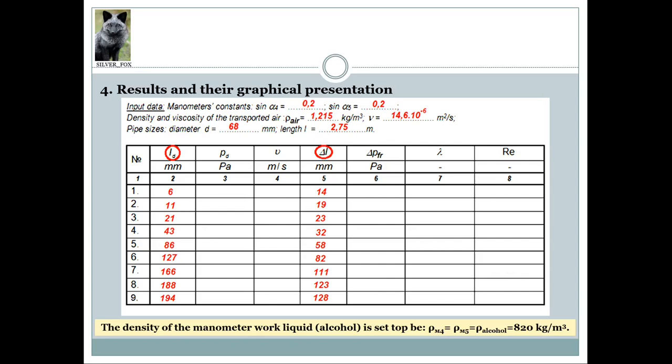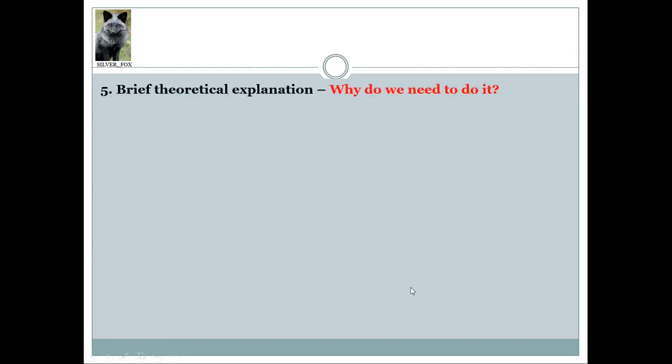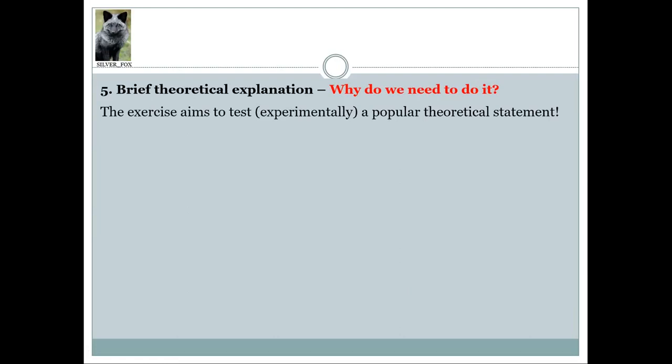Before visiting the laboratory, let's make a brief theoretical overview answering the most important question: why do we need to do this exercise? The simple answer is that the exercise aims to test experimentally a popular theoretical statement. It is stated that Reynolds number, determining the regime of fluid flow movement, has the greatest impact on the friction factor in the case of laminar regime of movement. After which, its impact begins to weaken, and in the full turbulent regime of movement, its effect is insignificant. This is the statement we are going to check.